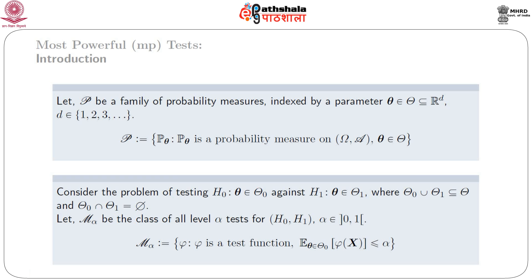For this, we consider P as a family of probability measures indexed by a parameter theta belonging to script Theta, which is a subset of script R to the power d, where d belongs to the set of positive integers 1 to infinity. That means, script P is equal to the class of those P_theta satisfying: P_theta is a probability measure on (Omega, script A) and theta belongs to script Theta.